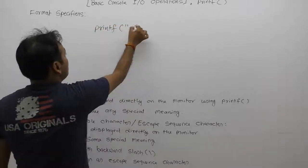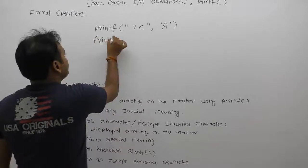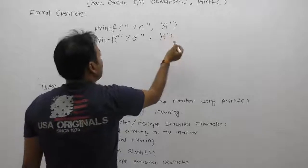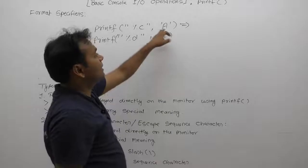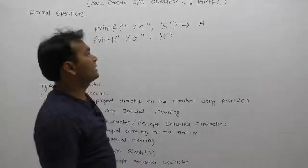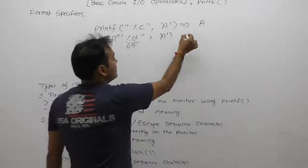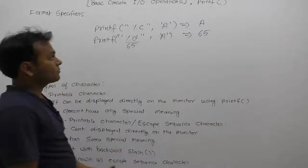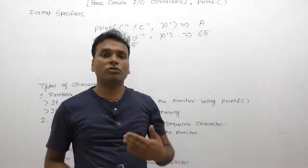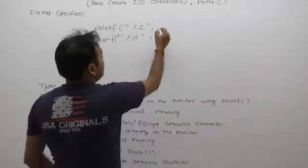We are writing some combinations of printf with characters. First: printf with percent c, supplying character 'a' — output is 'a' printed directly. Second: printf with percent d, supplying character 'a' — according to percent d, it replaces the current ASCII value of 'a' which is 65, so the displayed value is 65, not 'a'. If you want to display the symbolic value 'a', you should use percent c.